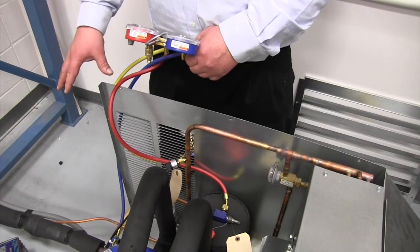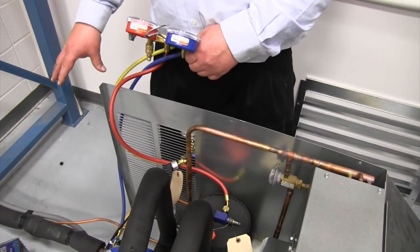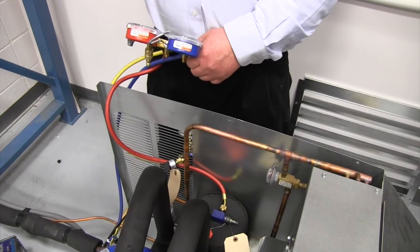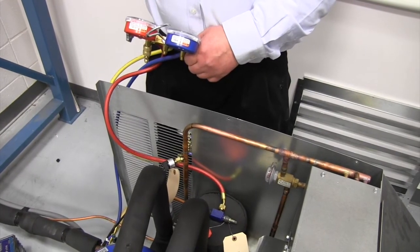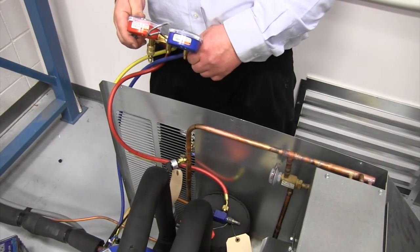Now that we've vacuumed out our line set, we've turned on our service valves to give our line set a positive pressure. Then we connected our ice machine via the quick disconnects. The system is all tied together now, and we're ready to charge.